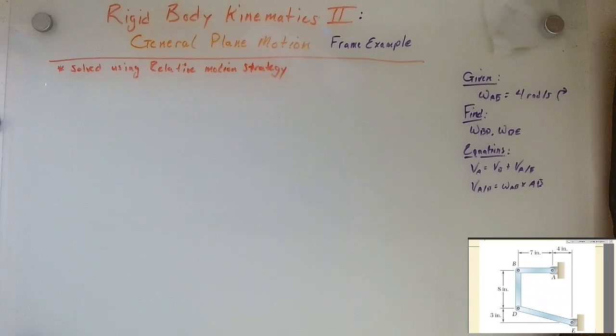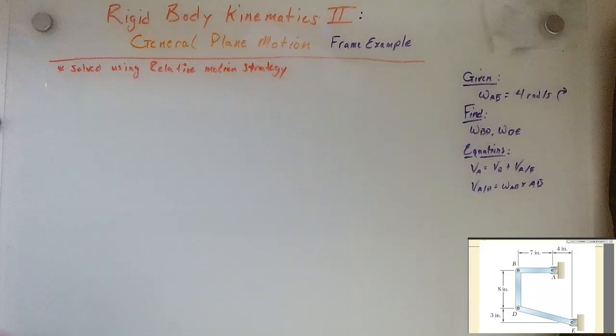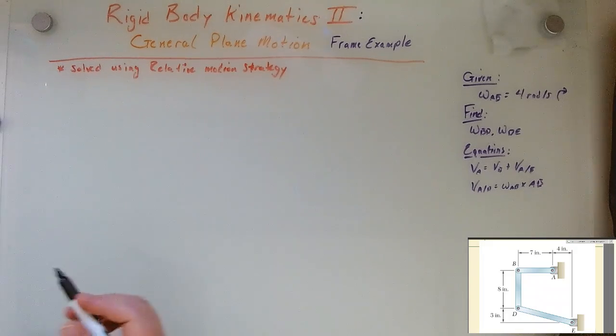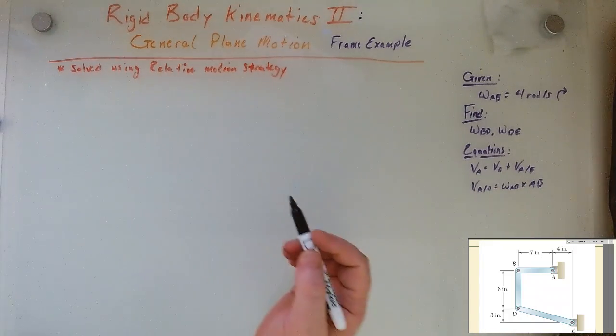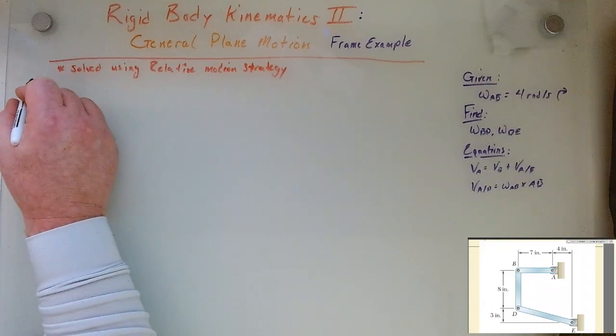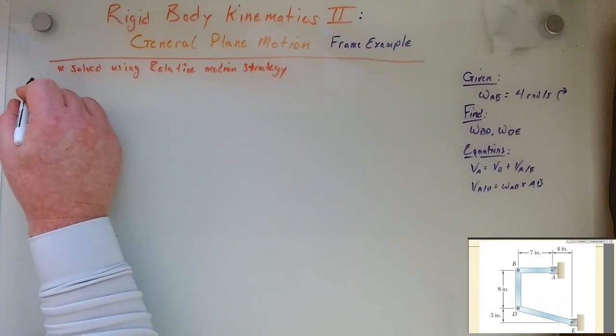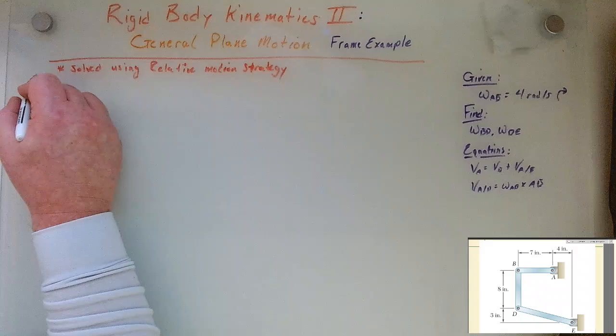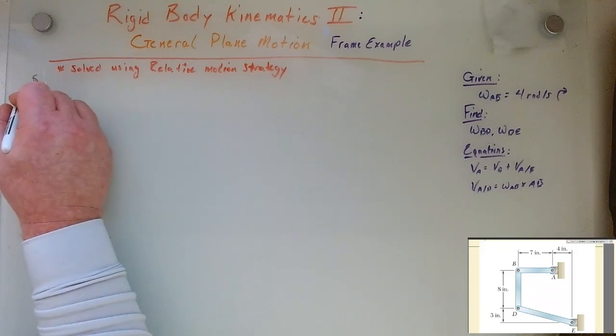The physical system that we are looking at is shown here, and we're given that the rod AB is rotating at a velocity of four radians per second in the clockwise direction. We're given the geometry, and we are asked to find the angular rotation of bar BD and DE.